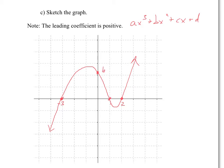I'm sketching this because I know the positive x cubed function does something like that — you go down here, you go up here. The difference between these two functions is x cubed only has a zero at x equals zero, whereas this one has zeros at negative three, one, and two. The shape becomes a little different, but the beginning and end behavior are the same.